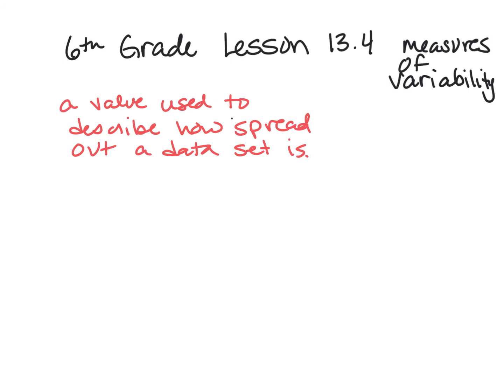6th grade lesson 13.4 is measures of variability. A measure of variability is a single value that's used to describe how spread out a set of data is. This might sound familiar because we just talked about the MAD — the mean absolute deviation — and MAD is one measure of variability.